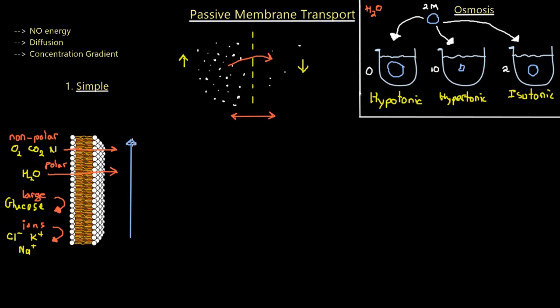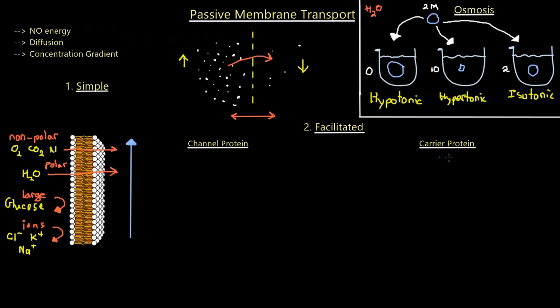In general, permeability increases for smaller, non-polar molecules. Facilitated diffusion is carried out by two types of transport proteins — that's why it's called facilitated. However, it still does not require any energy because it is passive membrane transport. The two types of proteins are channel proteins and carrier proteins.